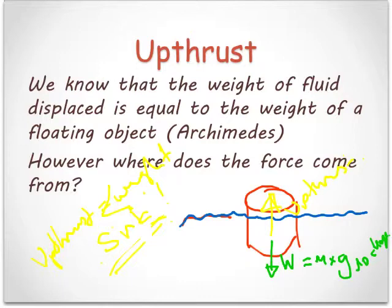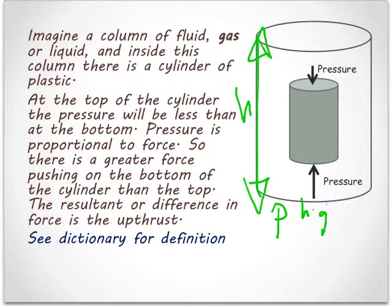So where does the upthrust come from? It comes from the difference in pressure at the top and the bottom of the fluid. Because remember, this column of fluid here, of height H, will have a certain pressure at the bottom. And it will be higher than the pressure at the top. Why is that? Because of this formula here, pressure equals rho gh.